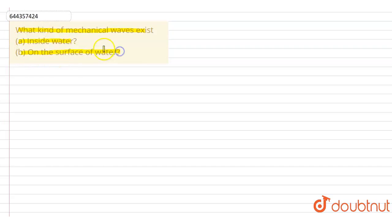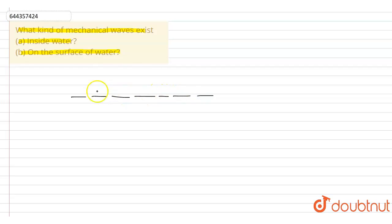To understand this, let's assume this is the surface of water. Now we are throwing a stone on the surface of water. After throwing the stone, the water particle will oscillate — this is the motion of the surface particle.